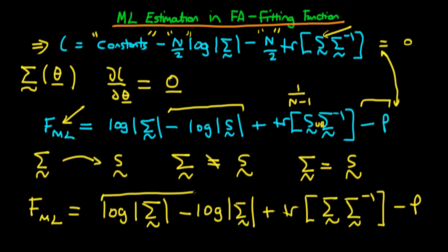These first two log terms obviously cancel out and disappear. We're left with the trace of Σ times the inverse, which is just the trace of an identity matrix with dimensions p. Then we take off p from that. The trace of an identity matrix of order p is just p because we've got p ones along the diagonal, and we take off p from that, which leaves us with F_ML = 0.